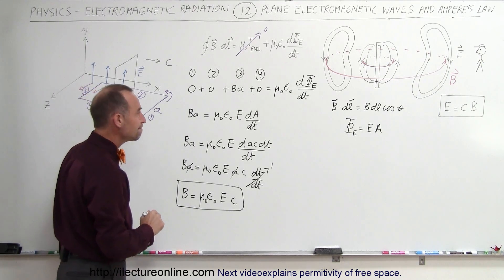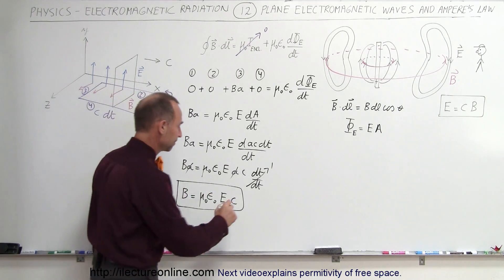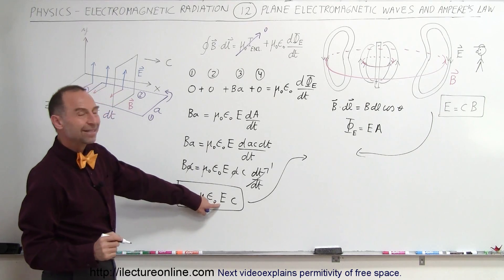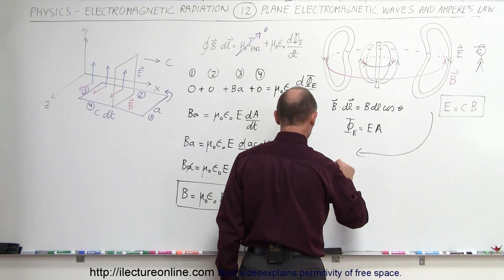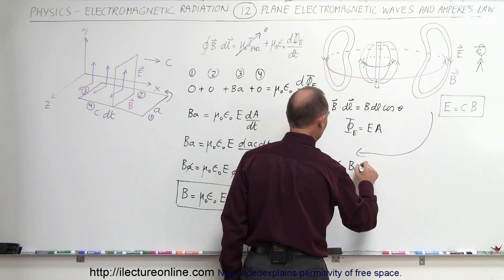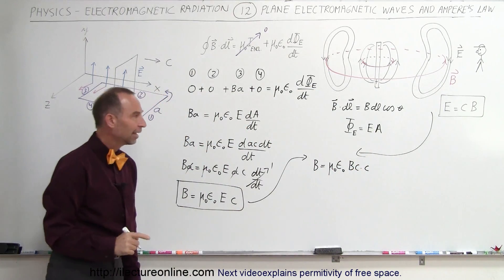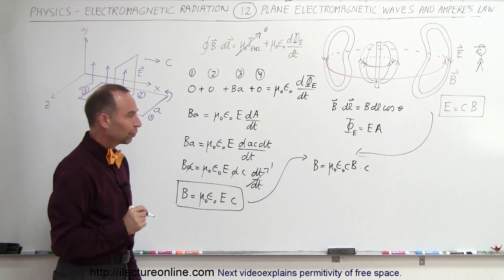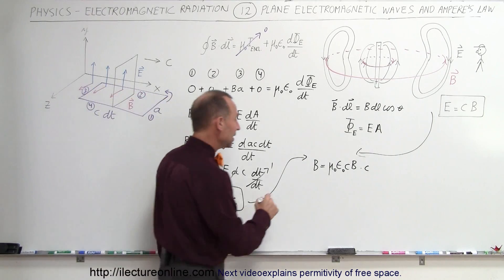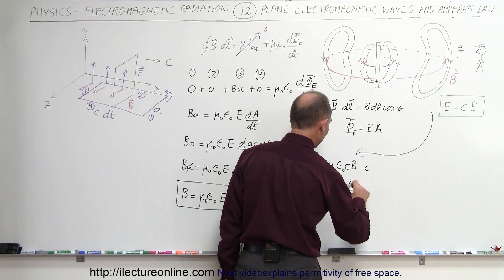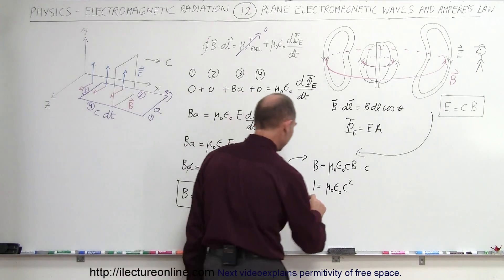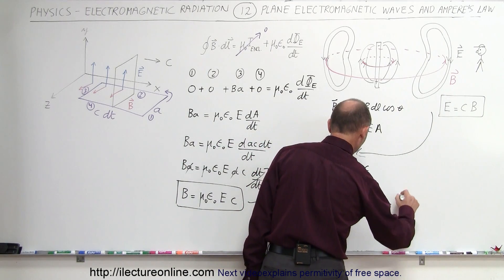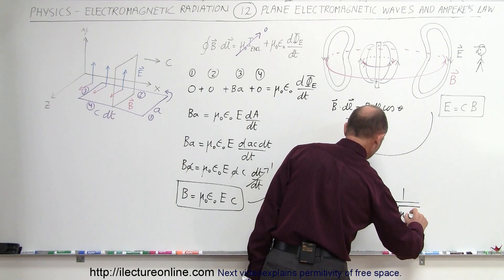We're going to combine these two equations. We'll replace E by C times B. Then on the left side, B equals μ₀ε₀ times C times B times C, because we still have the C from over there and E is C times B. We can divide B from both sides, so we get 1 equals μ₀ε₀ times C squared. Solving for C, we get C squared equals 1 over μ₀ε₀, and finally taking the square root of both sides, the speed of light equals 1 divided by the square root of μ₀ times ε₀.